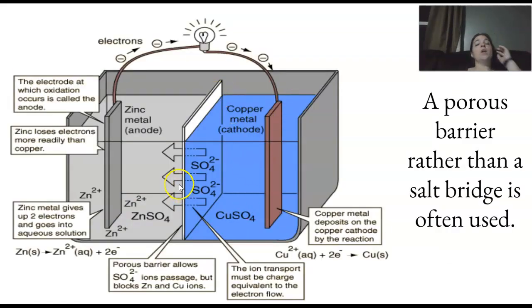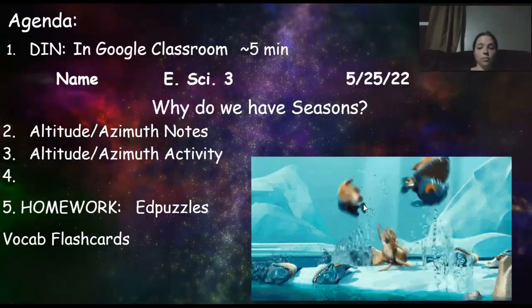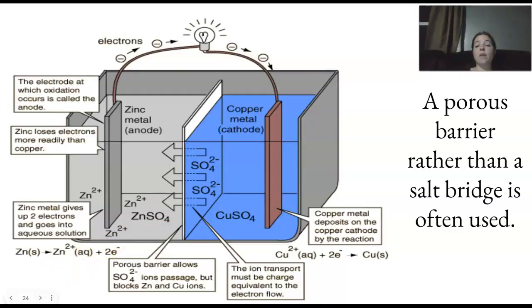A porous barrier could also be used as opposed to a salt bridge. Okay. So, looking at this, you got the porous bridge allows the sulfate to pass through. But, it blocks the zinc and the copper. All right. That's it. If you have any questions, please don't hesitate to ask. And I hope you guys have a great day.